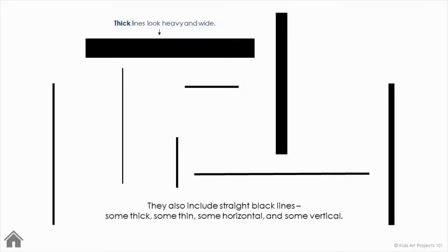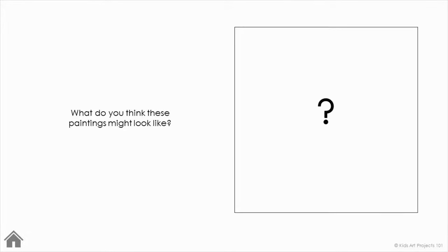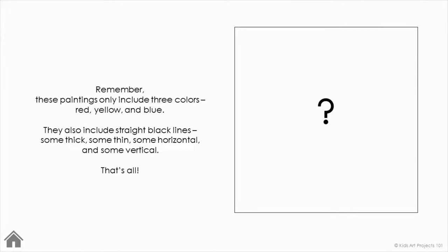What do you think these paintings might look like? Remember, these paintings only include three colors — red, yellow, and blue. They also only include straight black lines, some thick, some thin, some horizontal, and some vertical. That's all.